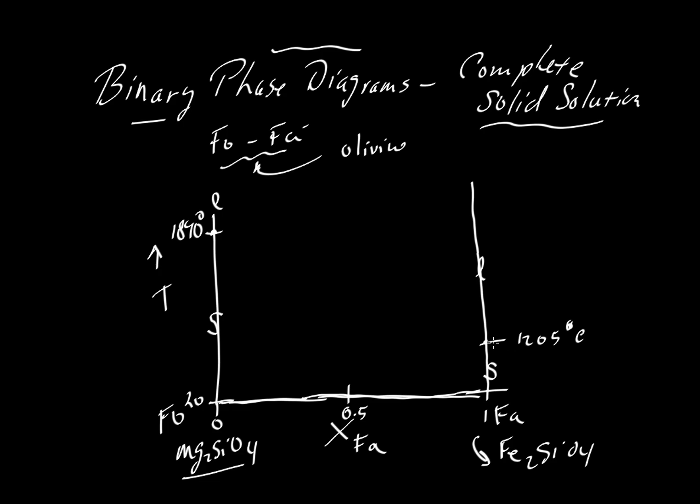The end members have a sharp melting point because they are pure substances. All pure substances—pure elements, pure compounds—have a very sharp melting point. However, if we have mixtures, then mixtures will have a melting interval.